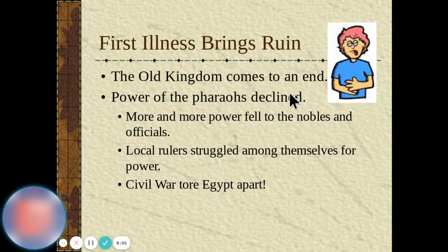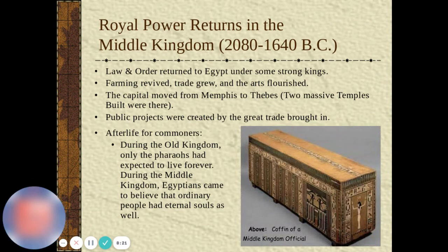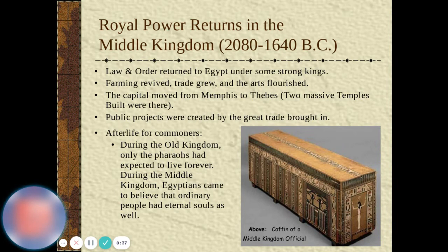The Old Kingdom came to an end as the power of the pharaohs declined. More and more power shifted to nobles and officials. Local rulers struggled among themselves for power, and war tore Egypt apart. Usually when a pharaoh died — especially after a long reign — disagreements happened over who would take over, and that's why conflicts broke out around those times.